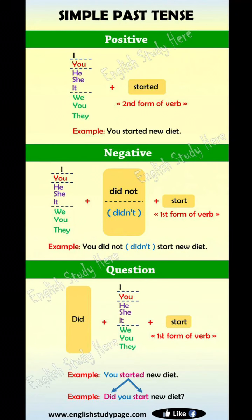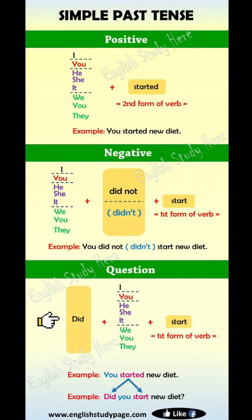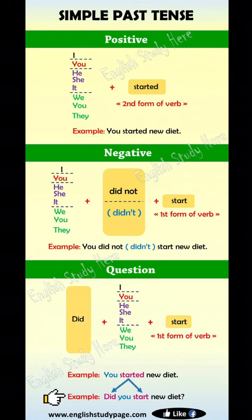Simple past tense for question: Did plus I, you, he, she, it, we, you, they, plus first form of verb. Example: You started a new diet. Another example: Did you start a new diet?